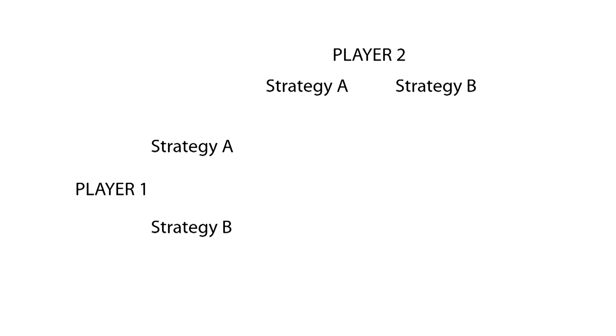In order to build a readable matrix, we must put each player in different places, as well as for the strategies. Usually we use rows to display player 1 strategies and columns to display player 2 strategies.